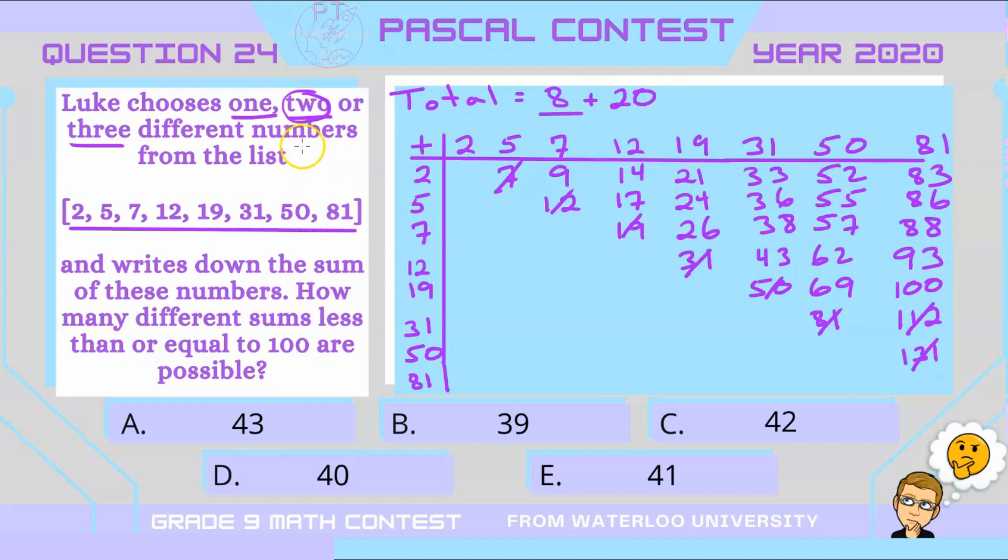All right, let's move on to three different numbers. Now, when we look at the sum of three numbers, the fact that the sum of any two consecutive numbers from the list equals the next number in the list becomes extremely important. So when you're adding three numbers, if any two of those numbers are consecutive, let's look at what happens.